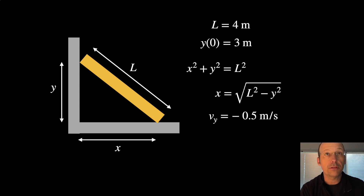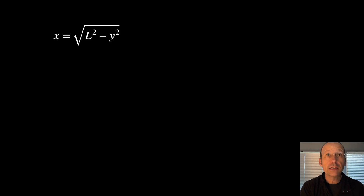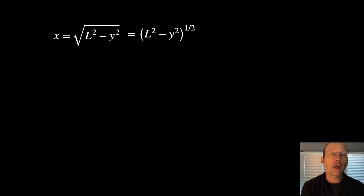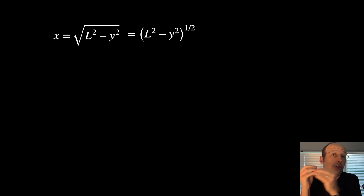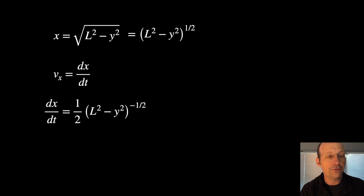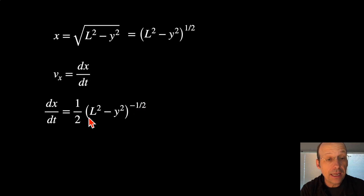Now let's get to this problem. I have X as my function. I want to find the X velocity, so I need to take the derivative with respect to time. I like to write square roots as powers, so I'll rewrite this as (L squared minus Y squared) to the one-half power. That way I can use the power rule. The velocity is just the derivative with respect to time, so let's differentiate. I bring the one-half down front and reduce the power by one to get negative one-half. But I'm not done — I have to use the chain rule and take the derivative of the stuff inside.